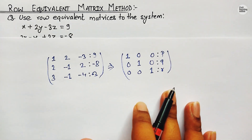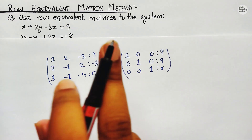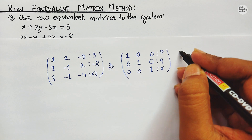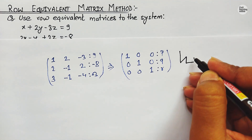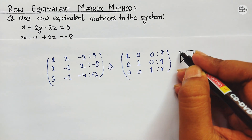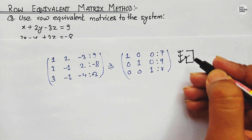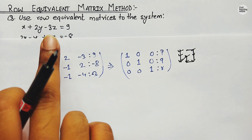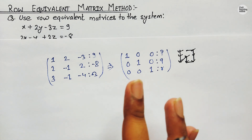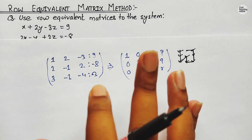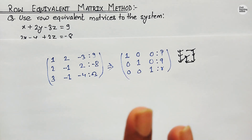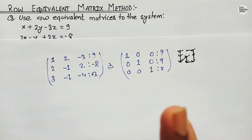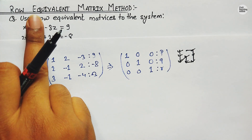Whenever we are solving the matrix using the Row Equivalent Matrix form, we have to follow a certain pattern. When solving a 3×3 matrix, we have to apply operations in a specific manner — first targeting this element, then this, then this, then the middle, and proceeding in this way. It will become more clear when I start solving the numerical. There are a few operations in Row Equivalent Matrix which you must understand in order to solve any kind of numerical. Let me present the elementary row operations used while solving numerical on Row Equivalent Matrix Method.